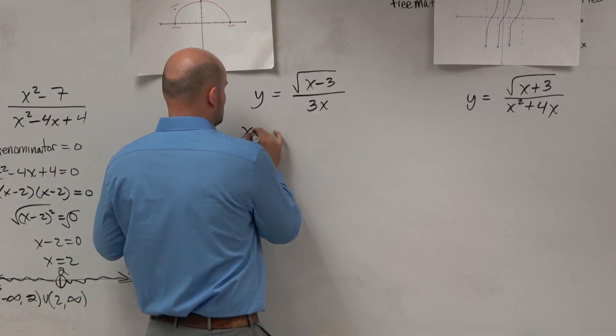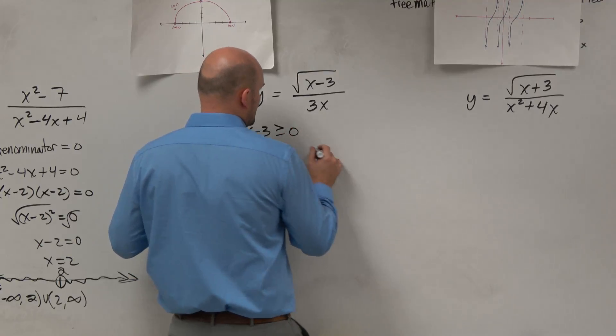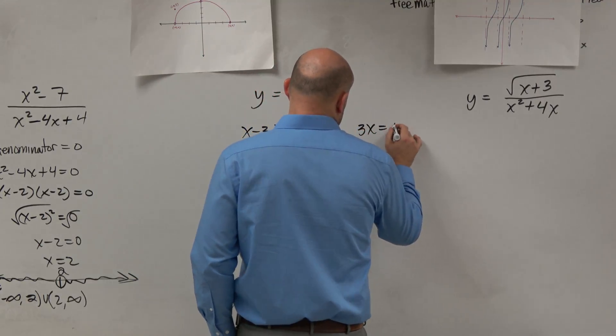So we're going to say x minus 3 has to be greater than or equal to 0, and 3x equals 0.